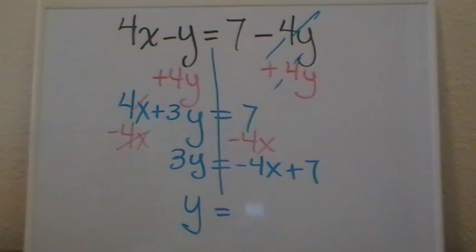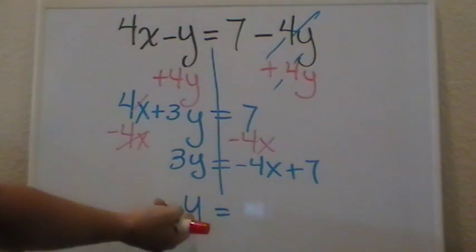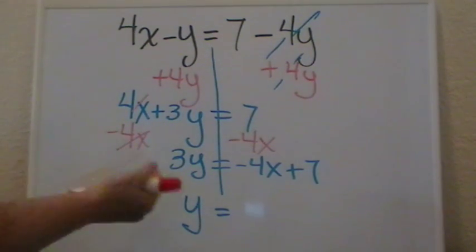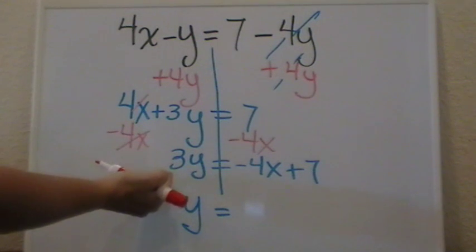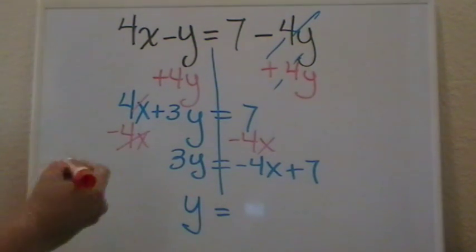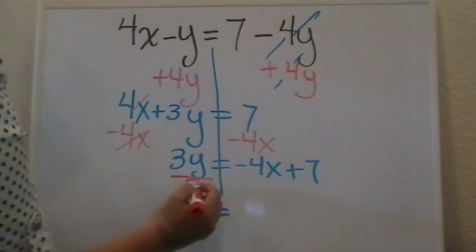Now we're almost done. The only number that we need to cancel now to isolate y will be the 3. Don't forget that the 3 being the coefficient is multiplying your y. So to do the inverse operation, that will be divide by 3.